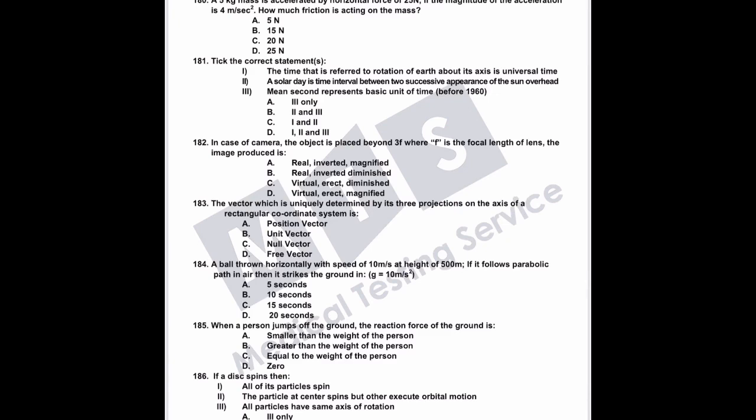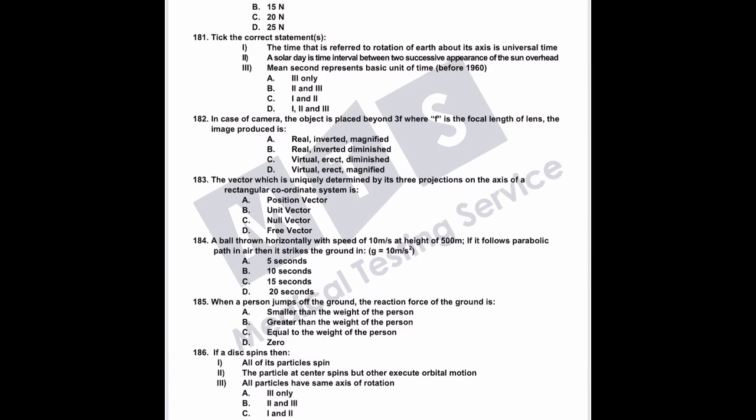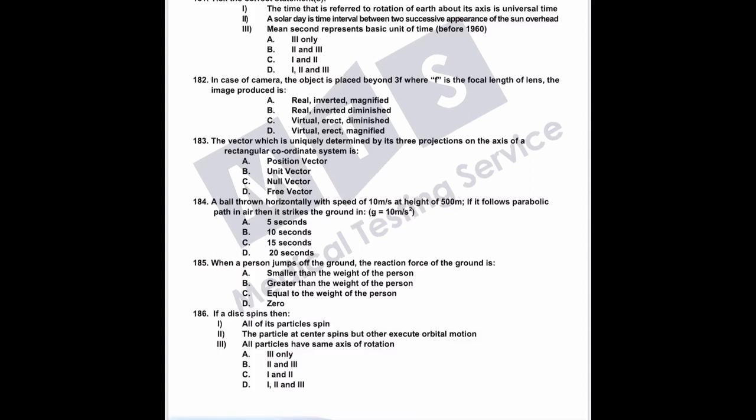Question 183: a vector uniquely determined by its three projections on the axes of a rectangular coordinate system is a free vector.